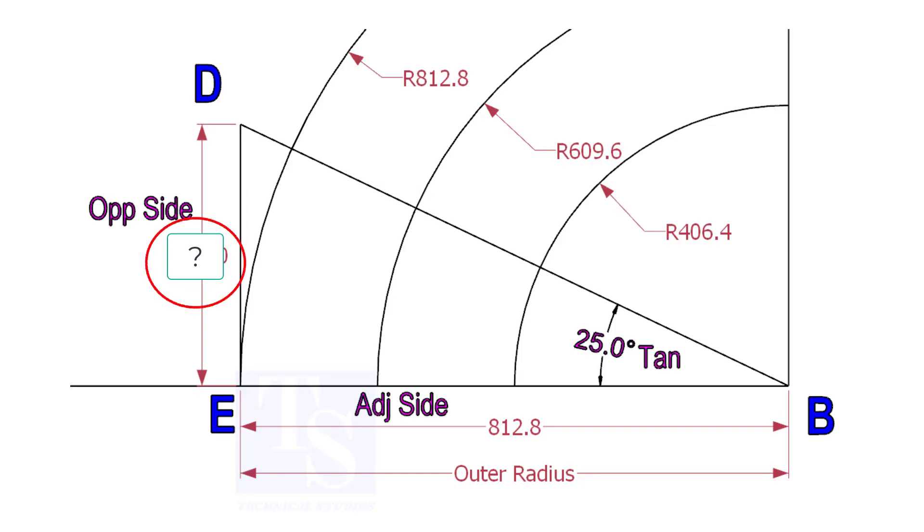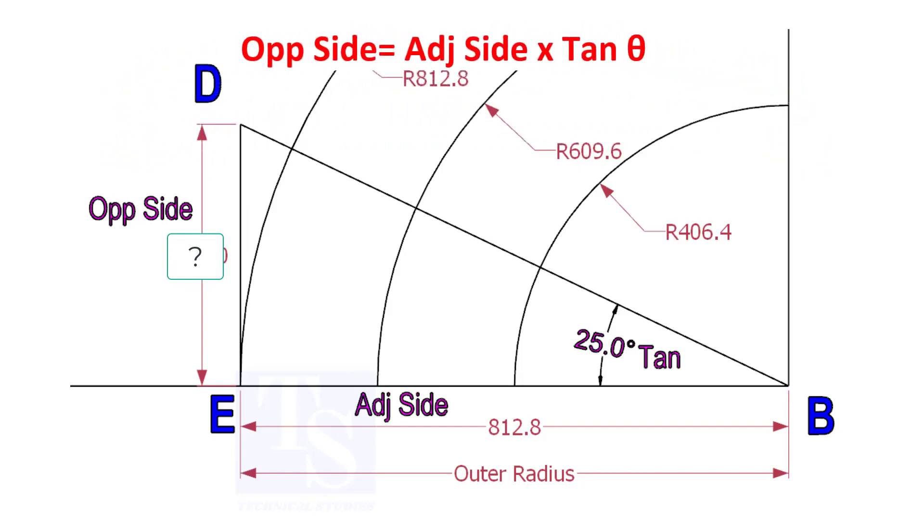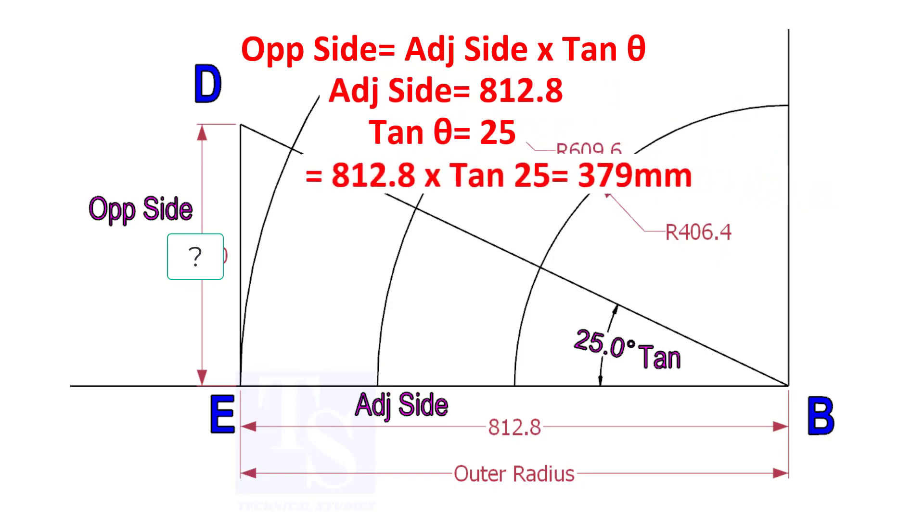To calculate ED, we need to apply the formula: tan theta equals opposite side divided by adjacent side. Opposite side equals adjacent side multiplied by tan theta. 812.8 into tan 25 equals 379 millimeters.